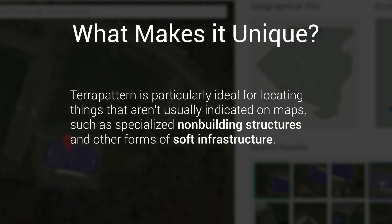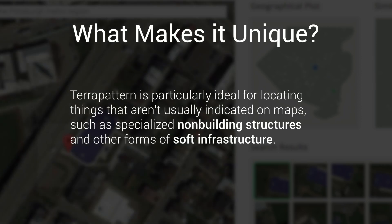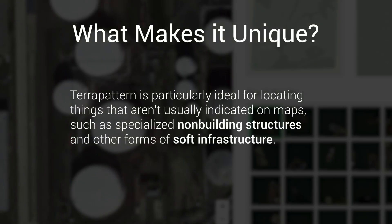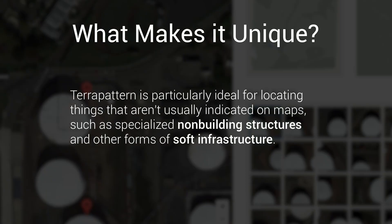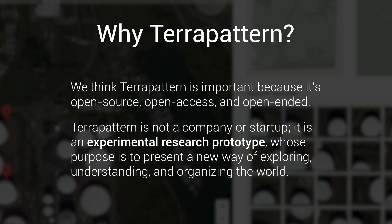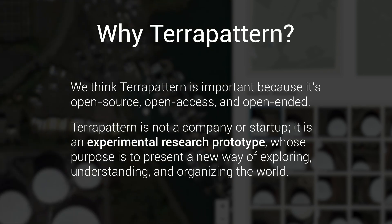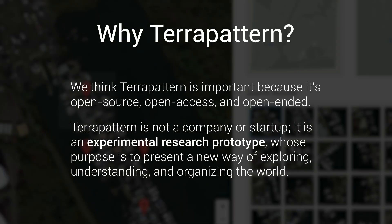TerraPattern can search for lots of things, but it's particularly well suited for locating things that can't usually be found on maps, such as specialized non-buildings and other forms of soft infrastructure. We think TerraPattern is important because it's open source, open access, and open-ended.